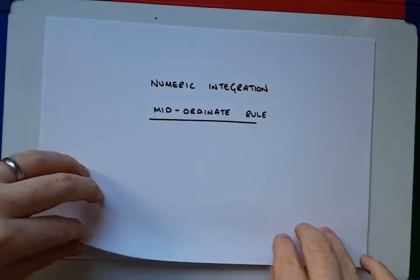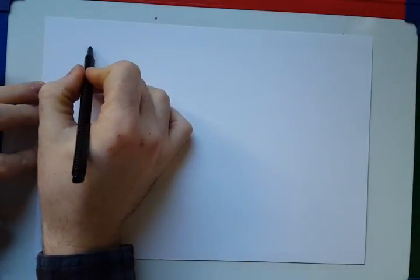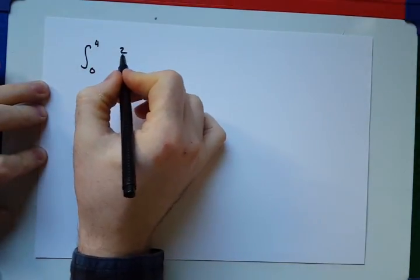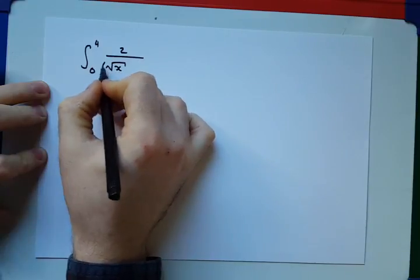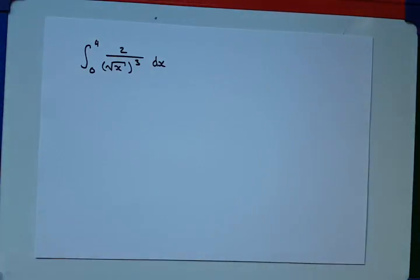To start us off, we're going to look at our traditional integration methods, which we would have covered before in a previous video. And what we're going to do is integrate between the limits of 4 and 0 the function of 2 over the square root of x cubed with respect to x.